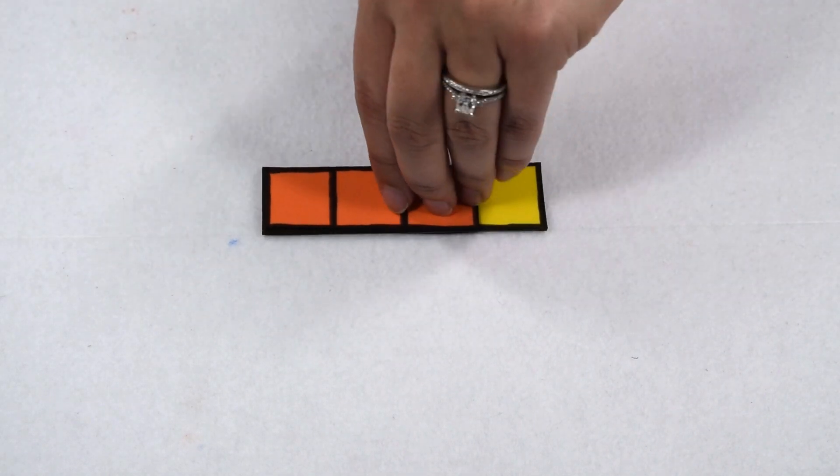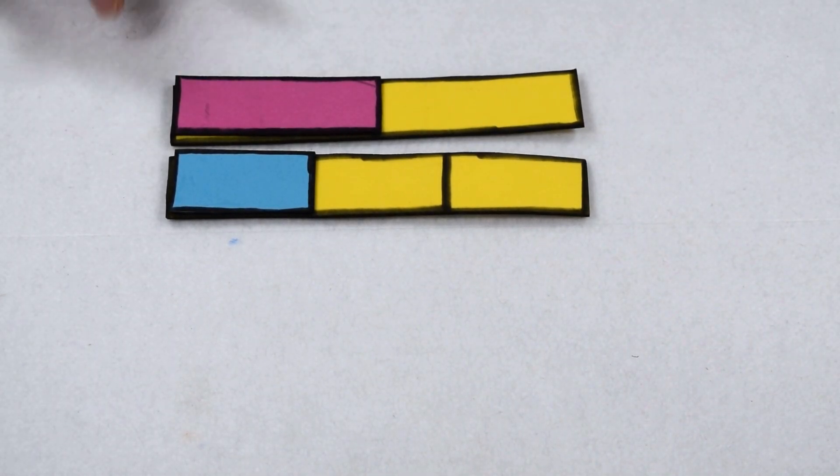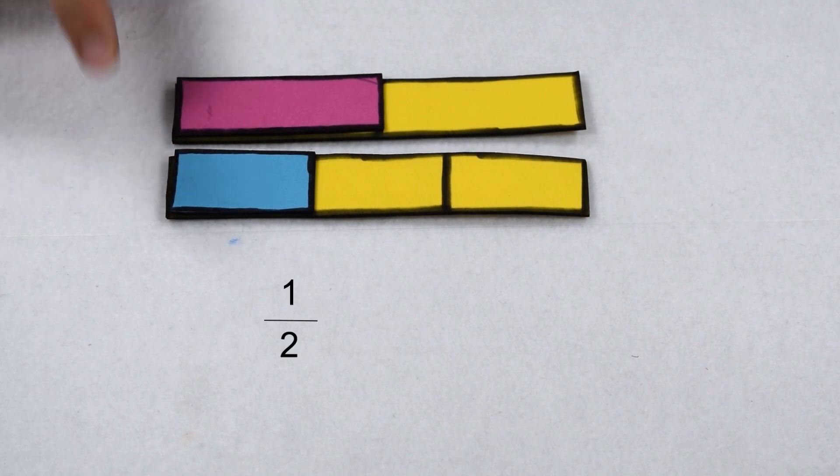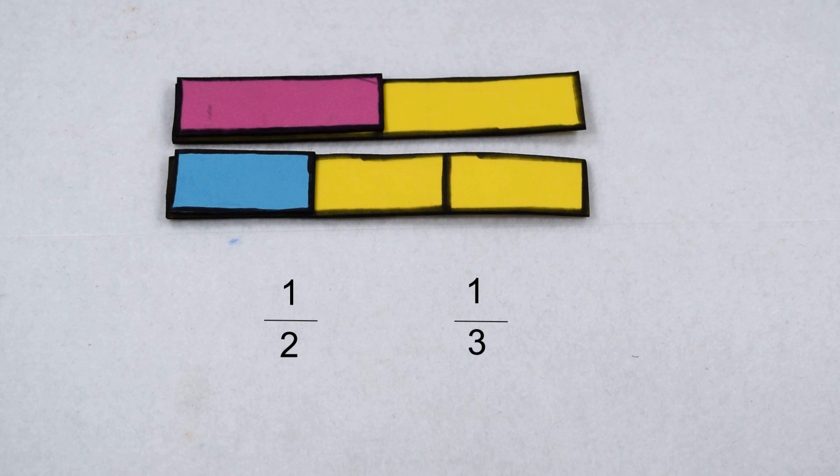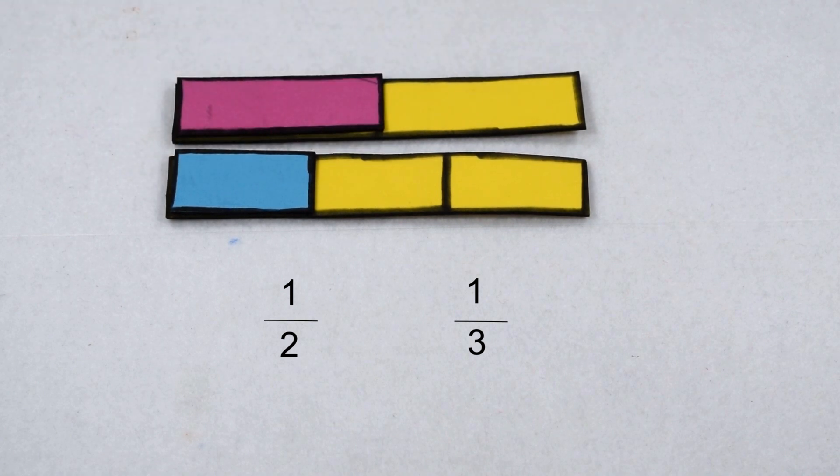What if we go the other way? Instead of comparing fractions with the same denominator, we look at fractions that have the same numerator. Here we have 1 half compared to 1 third. We can see we don't have equal size pieces, but since we have them drawn out in a fraction bar, we can still compare them. Our one piece on our halves bar is larger than our one piece on our thirds bar. This tells us that 1 half is going to be greater than 1 third.